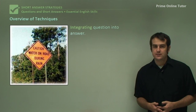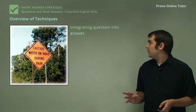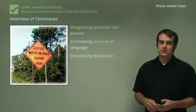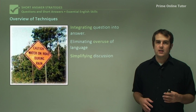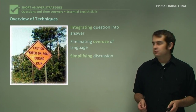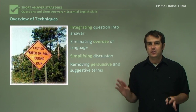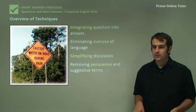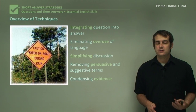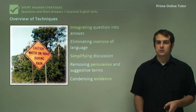First: integrating the question into the answer. Second: eliminating overuse of language — getting rid of language that doesn't need to be there. Third: simplifying discussion, so trying to get to the point more quickly without spending ages justifying everything. Fourth: removing persuasive and suggestive terms, which particularly applies to essay writing. And finally, condensing evidence — making sure that when you use evidence to support your answer, it is the right length, you don't have too much of it, and it addresses what you're trying to say.